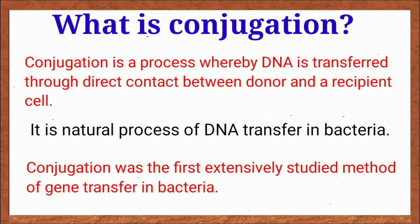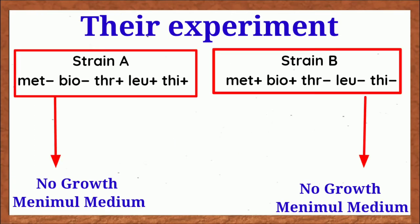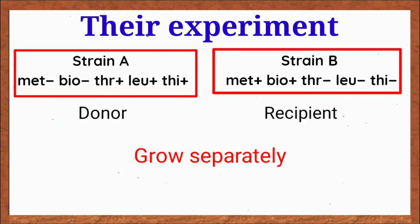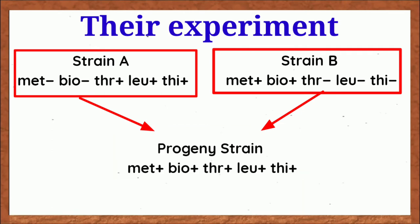Conjugation is a natural process whereby DNA transferred through direct contact between a donor cell and a recipient bacterial cell. This process was discovered by Lederberg and Tatum in 1946. They found that if donor and recipient bacterial culture are mixed, recombinant cells appear. That means progeny cells are unique and they are different genetically from both donor as well as from the recipient.